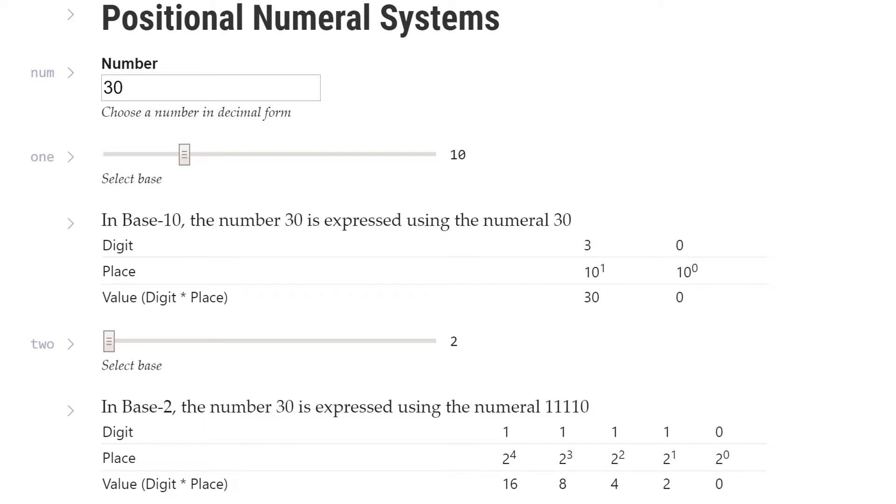Rewind the video and pay close attention to how this works in base 2. The groups are in powers of 2, so the values carry over more frequently as we count up. And for this reason, we only have two symbols, 0 and 1. This carryover process is a big deal. And one of the primary reasons positional numeral systems are so widely used today.